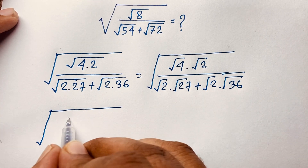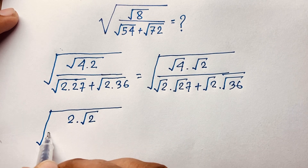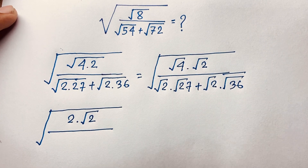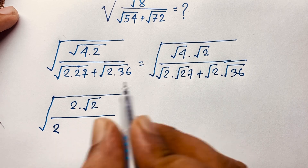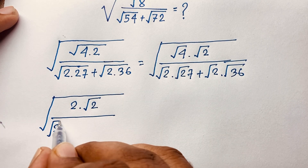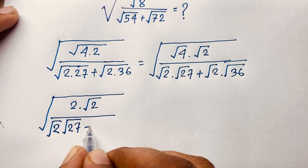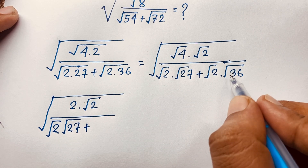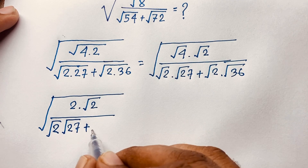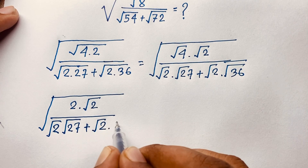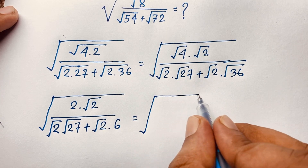Square root 4 equals 2, so we have 2 times square root 2. Here square root 2 times square root 27. Plus square root 36, which equals 6, so we get 6 times square root 2.